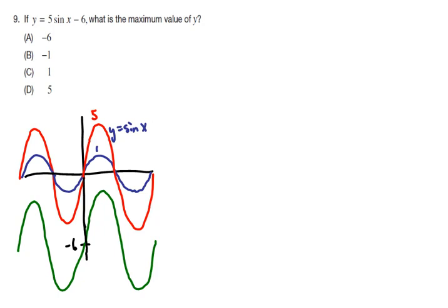the function 5 sine x had a maximum of 5, but that maximum value is now going to be shifted down 6 units, so it will now have a maximum of negative 1. And so the answer would be b here.